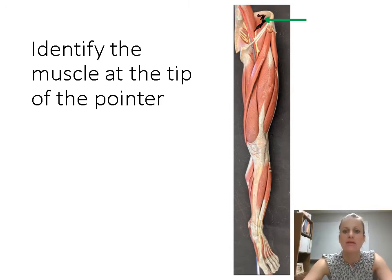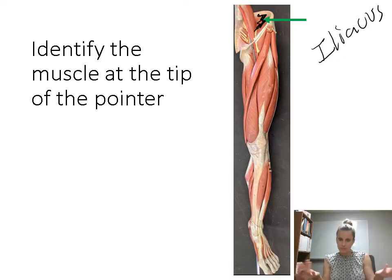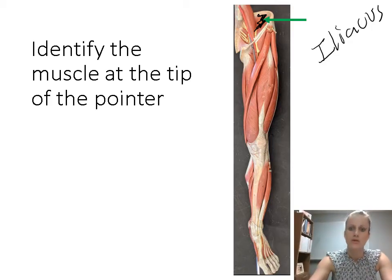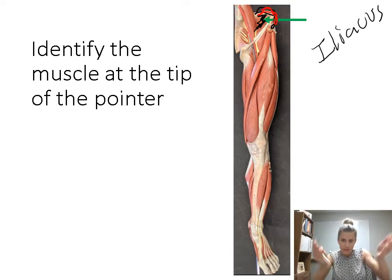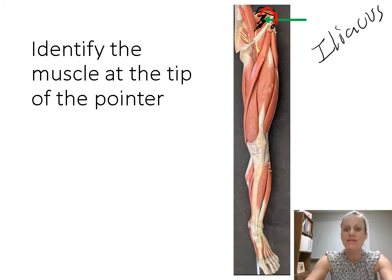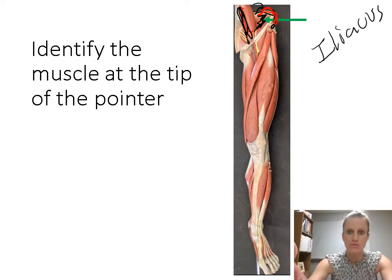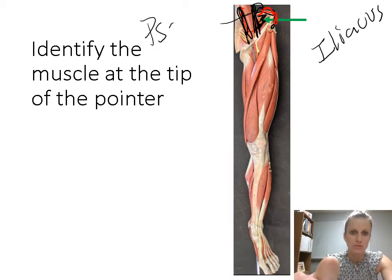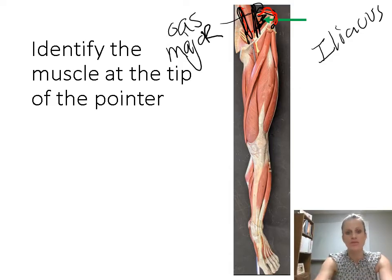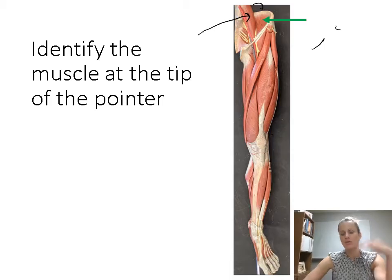This muscle right here is called the iliacus. The iliacus is on the ilium — the top part of the pelvic bone that curves up. It lines the iliac fossa, the inside of the ilium. This other muscle that's joined or associated with it is the psoas major. So the answer to this question would be iliacus; if the pointer were here instead, that would be the psoas major.